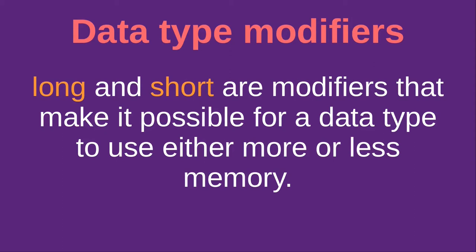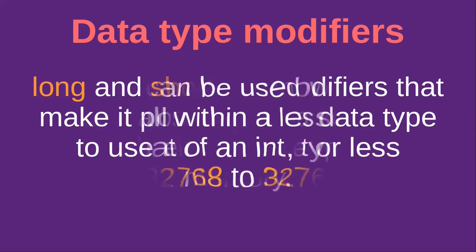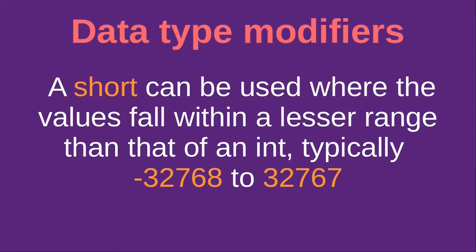One can alter the data storage of any data type by presenting it with certain modifiers. Long and short are modifiers that make it possible for a data type to use either more or less memory. The int keyword need not follow the short and long keywords. A short can be used where the values fall within a lesser range than that of a typical int.